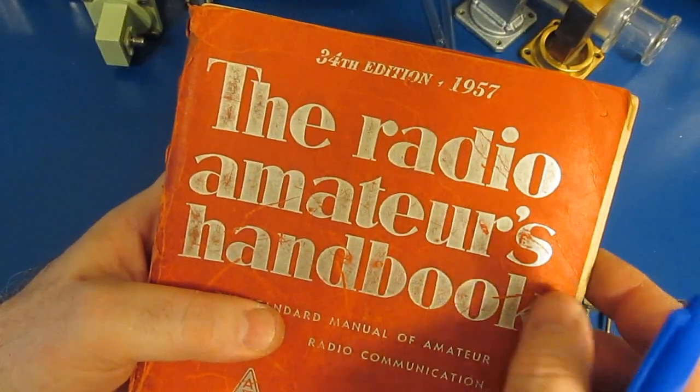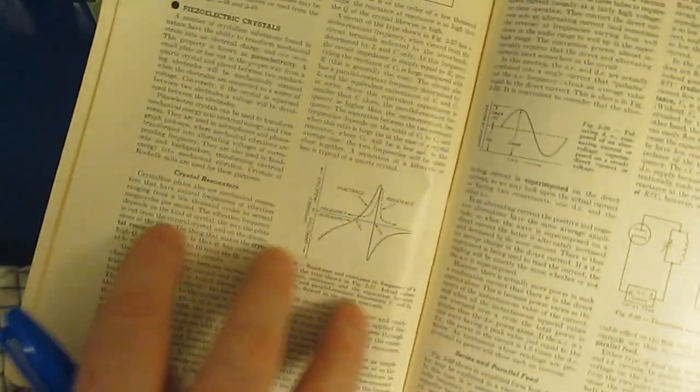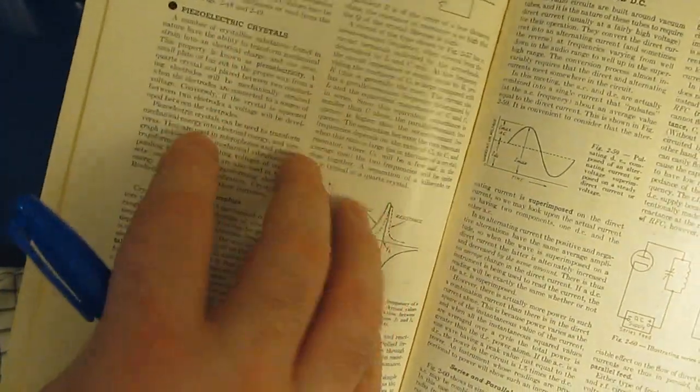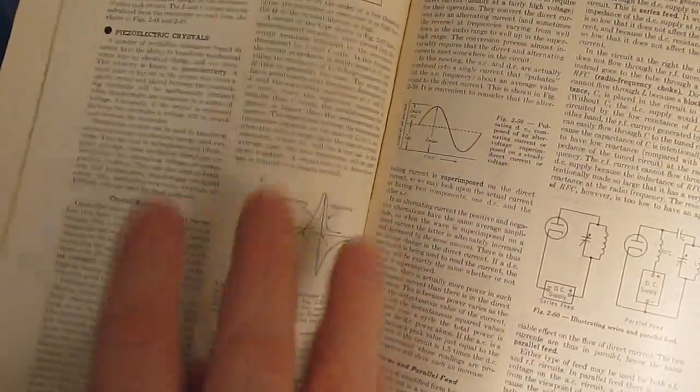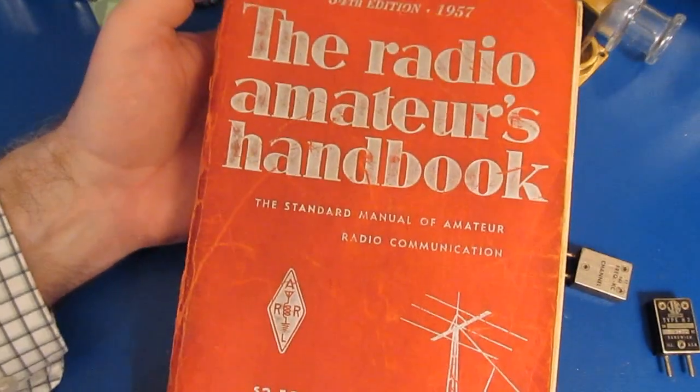This is the 34th edition of the Radio Amateurs Handbook, published in 1957. It has this whole section here on crystals. If you're unfamiliar with how they work, I recommend you get a book like this. Probably a lot of this information is posted on the internet as well.